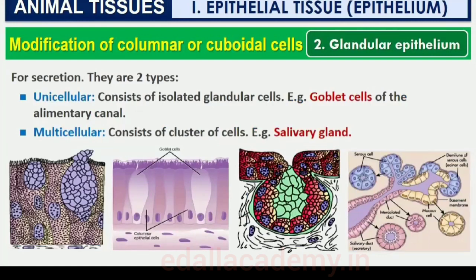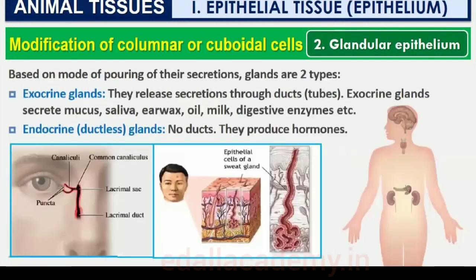Glandular epithelium is mainly of two types: unicellular, consisting of isolated glandular cells such as goblet cells of the alimentary canal, and multicellular, consisting of a cluster of cells such as salivary glands. On the basis of the mode of pouring of their secretions, glands are divided into two categories: exocrine and endocrine glands.